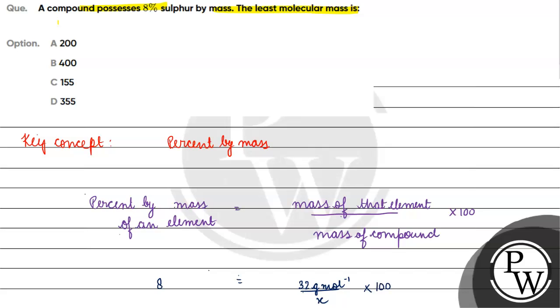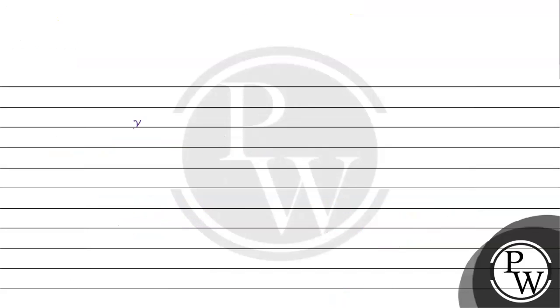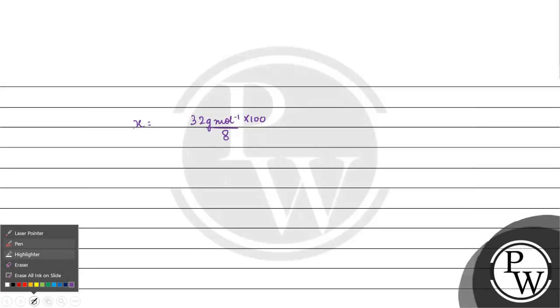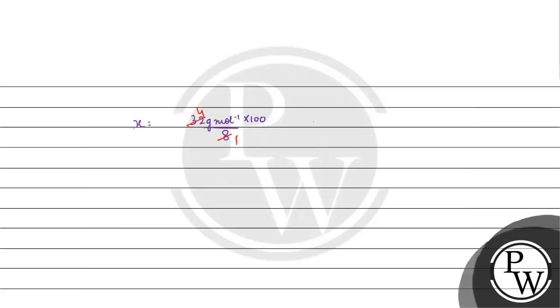Multiplied by 100. Now, if we need to find the value of x, x will be equal to 32 grams per mole times 100 divided by 8. If we solve this, we get 400 grams per mole.